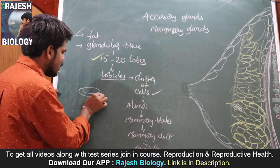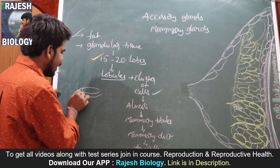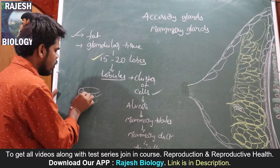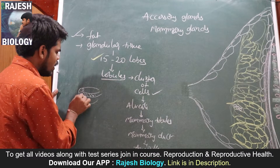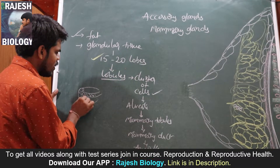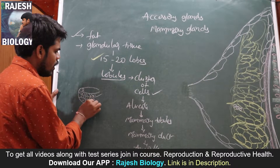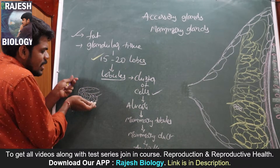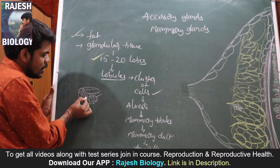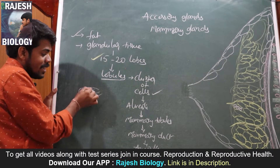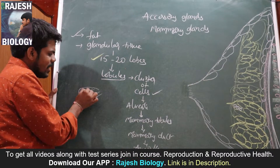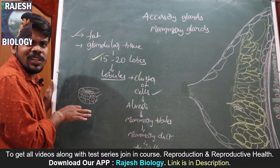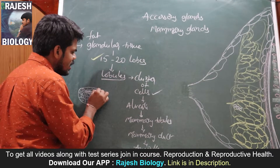The secreted milk is stored in a sac. I just cut and enlarged the cluster of cells — that is the alveoli. It is just like a sac-like structure. These are the alveolar cells; they secrete the milk, and that milk is collected in the lumen of the alveoli.